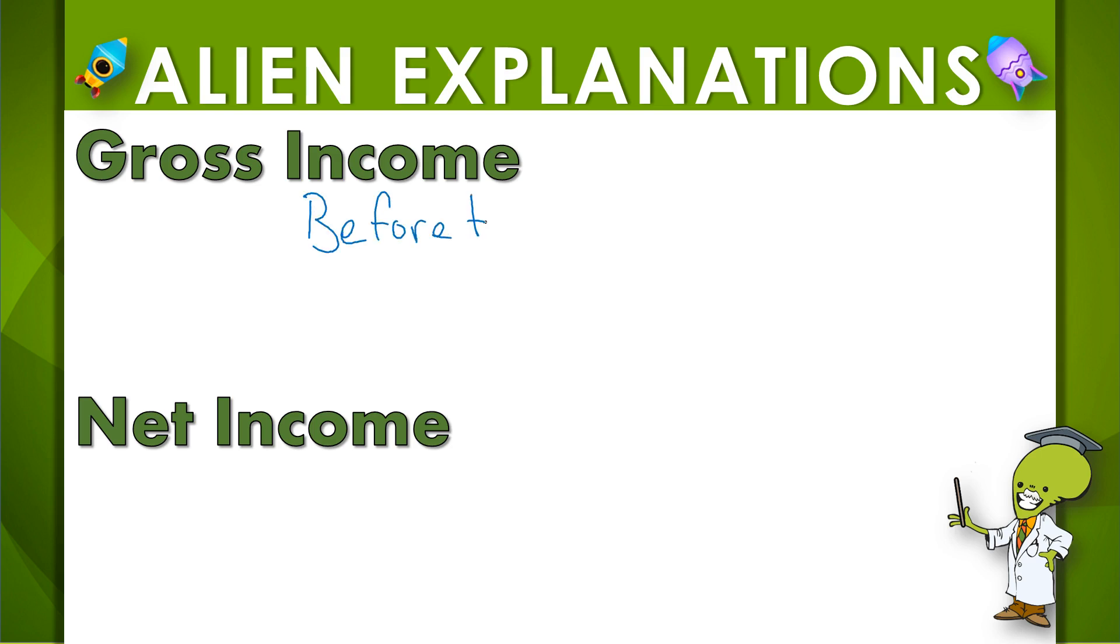So let's pretend that you have a job, and at this job you make $10 an hour. And now let's say you worked 40 hours in a week. So, how much money would you make? Well, 10 times 40, that would be $400 a week.